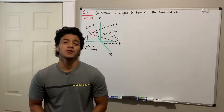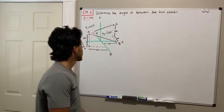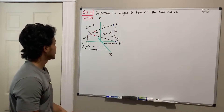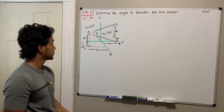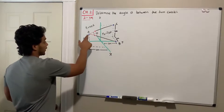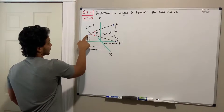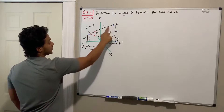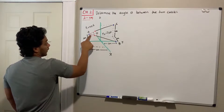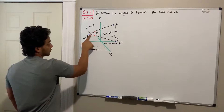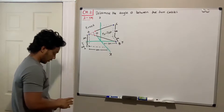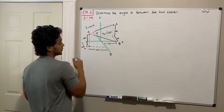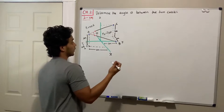Welcome everyone to Learning by Teaching in Statics. We're going to do problem 2.114. It says determine the angle theta between the two cables. We have two cables with forces F1 that goes from A to C, and F2 that goes from A to B.